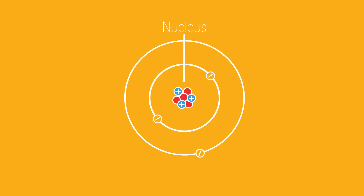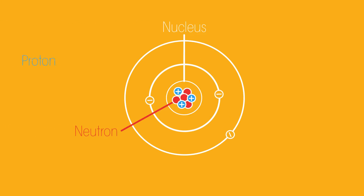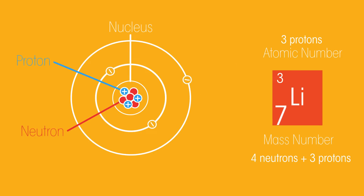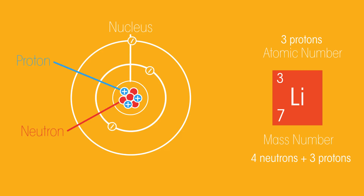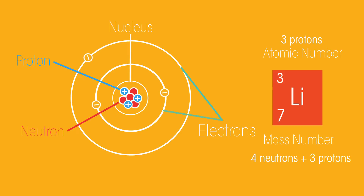The nucleus is made up of neutrons and positively charged protons. The total number of these particles is called the mass number, and they each have a relative mass of one. Orbiting the nucleus in specific patterns are negatively charged electrons. These are much lighter — in fact, their mass is so small we can usually ignore it.